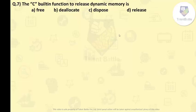Next question: the C built-in function to release dynamic memory is: A) free, B) deallocate, C) dispose, and D) release. The correct option here is A, free, because the other three options - deallocate, dispose, and release - aren't any functions in C. So the correct answer is A, free.